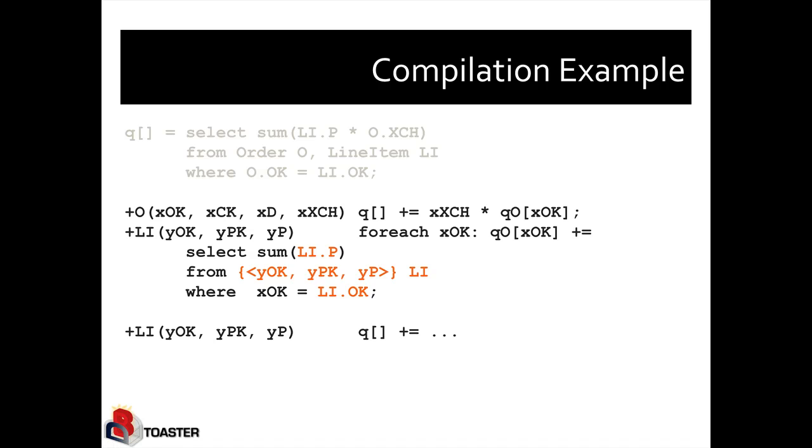So when we see a new line item tuple, we will have to start incrementally maintaining this. What happens when we see a line item tuple? We are basically going to insert the line item tuple and apply the query to the single tuple relation line item, that is the delta query. We can simplify this again by inlining the values that we've received for the arguments of the trigger function. So this is a query that doesn't have any relations anymore, so it's a constant query, it's arguably degree zero.